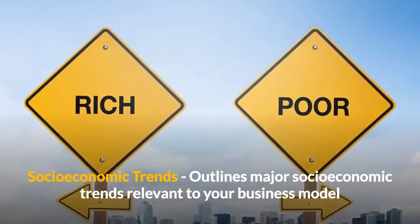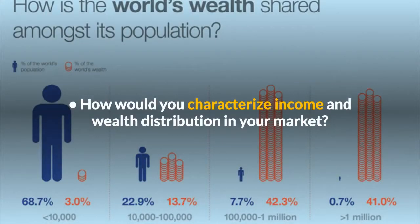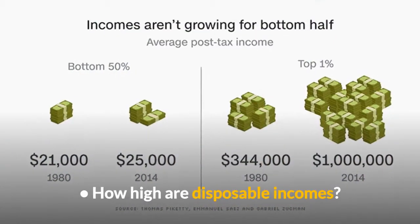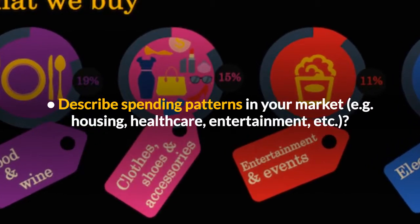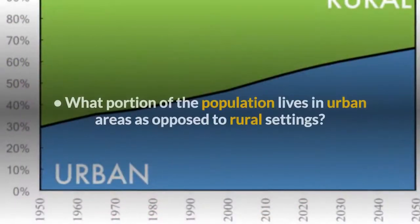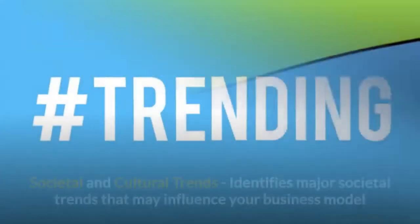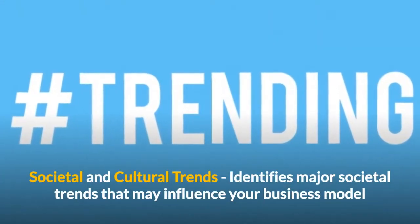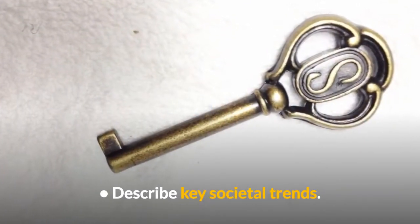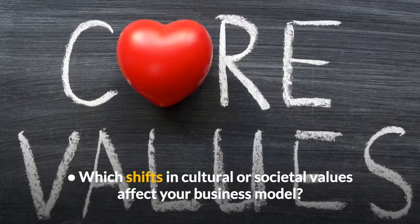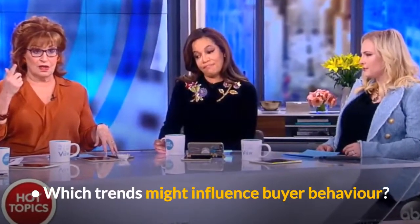Socio-economic trends: what are the key demographic trends? How would you characterize income and wealth distribution in your market? How high are disposable incomes? Can you describe spending patterns — for example, housing, healthcare, entertainment? What portion of the population lives in urban versus rural settings? And we'll try to identify the major societal and cultural trends that might influence your business model. What shifts in cultural or societal values affect your business model? What trends might influence buyer behaviour?